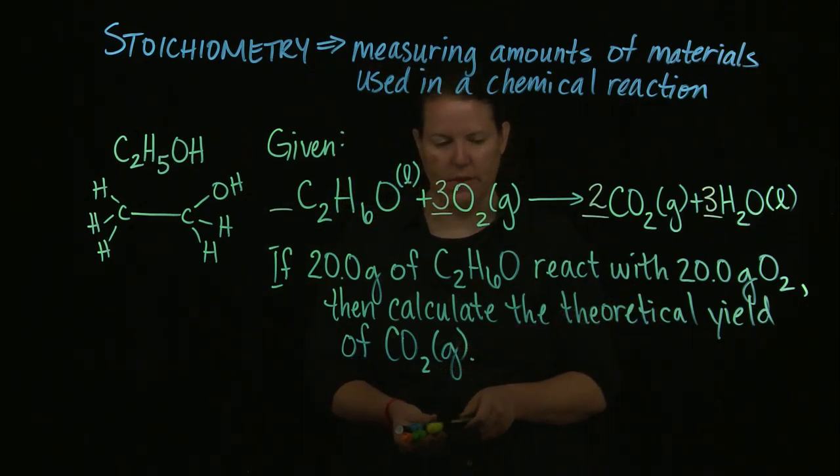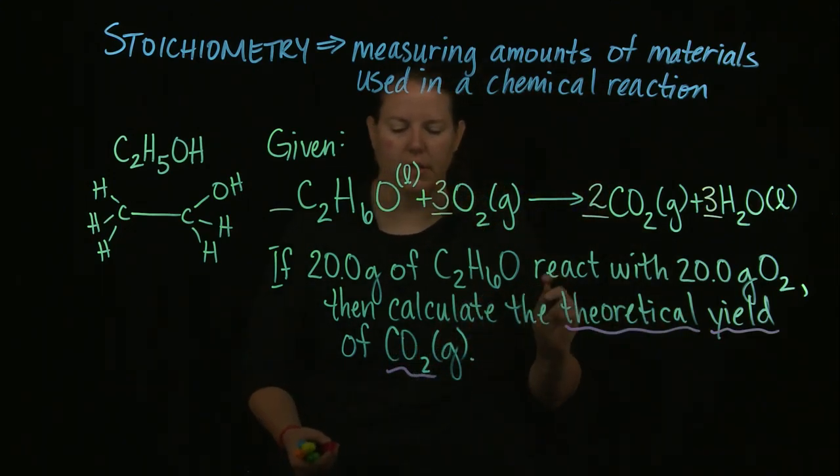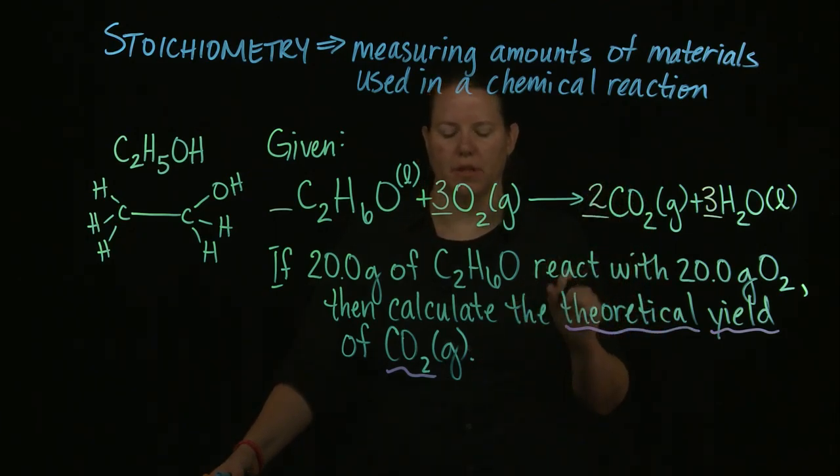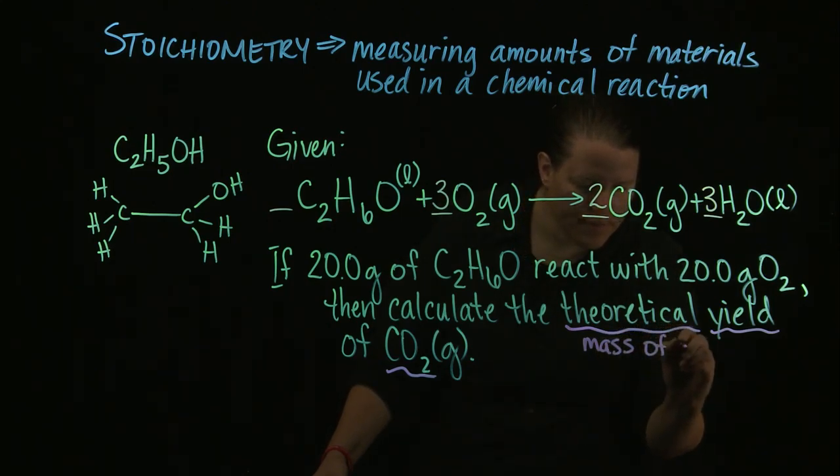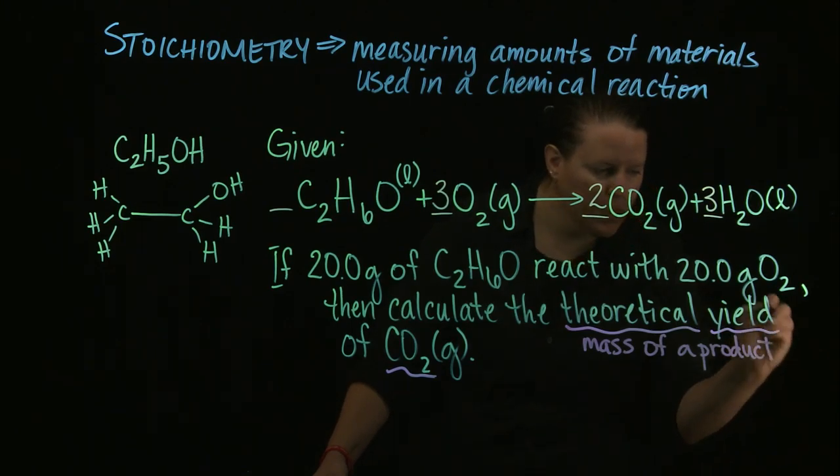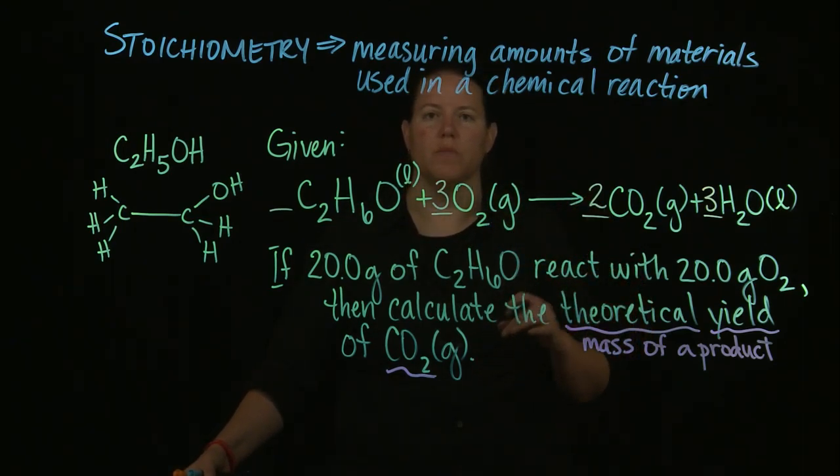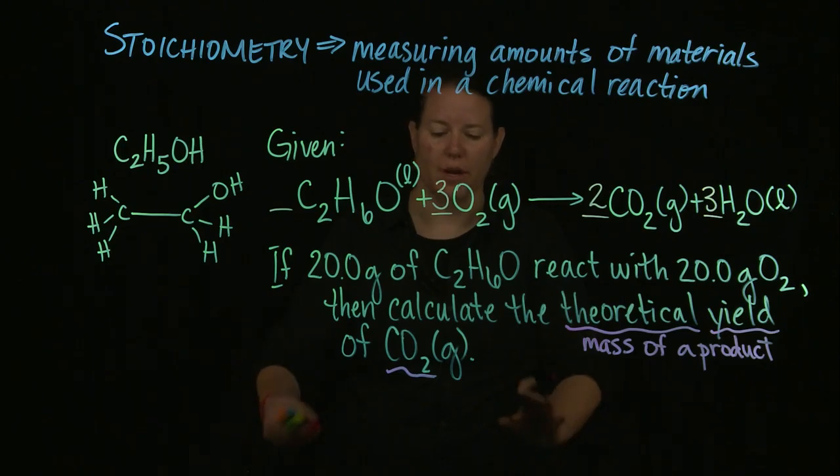One of the things that we often need to define is we need to define what we're trying to find. In the past, it's been a little bit easier to figure out what we were looking for because it asked explicitly for it. In this case, we have, unfortunately, this word or this term, phrase if you will, and that is theoretical yield. And theoretical yield is basically a way for us to say the mass of a product. Now, it means more than that. What a theoretical yield actually means is it means the calculated amount that you would get if you had the highest yield you possibly could have. That's what a theoretical yield is. So if you had the best day in lab ever, this is the number you'd get when you actually weigh your stuff on the scale at the end.